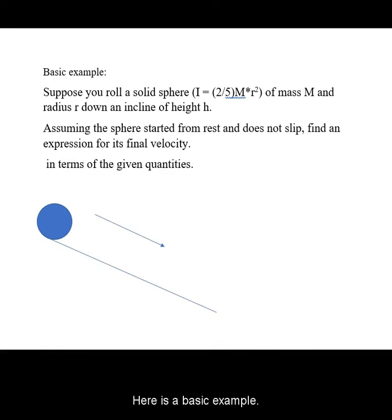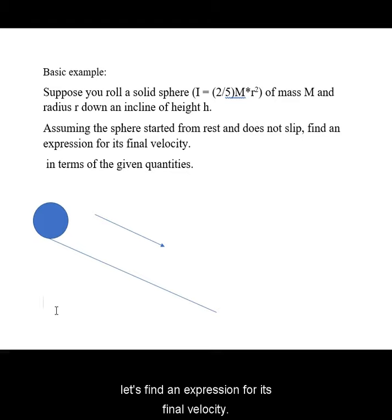Here is a basic example. A solid sphere of given moment of inertia, mass, and radius is rolling down a straight incline for a height h. Assuming the sphere started from rest and does not slip, let's find an expression for its final velocity.